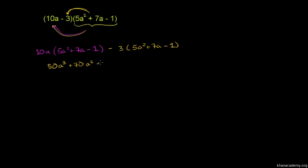10a times negative 1 is negative 10a. Then we distribute this negative 3 times 5a squared is negative 15a squared. Negative 3 times 7a is negative 21a. Negative 3 times negative 1 is positive 3.